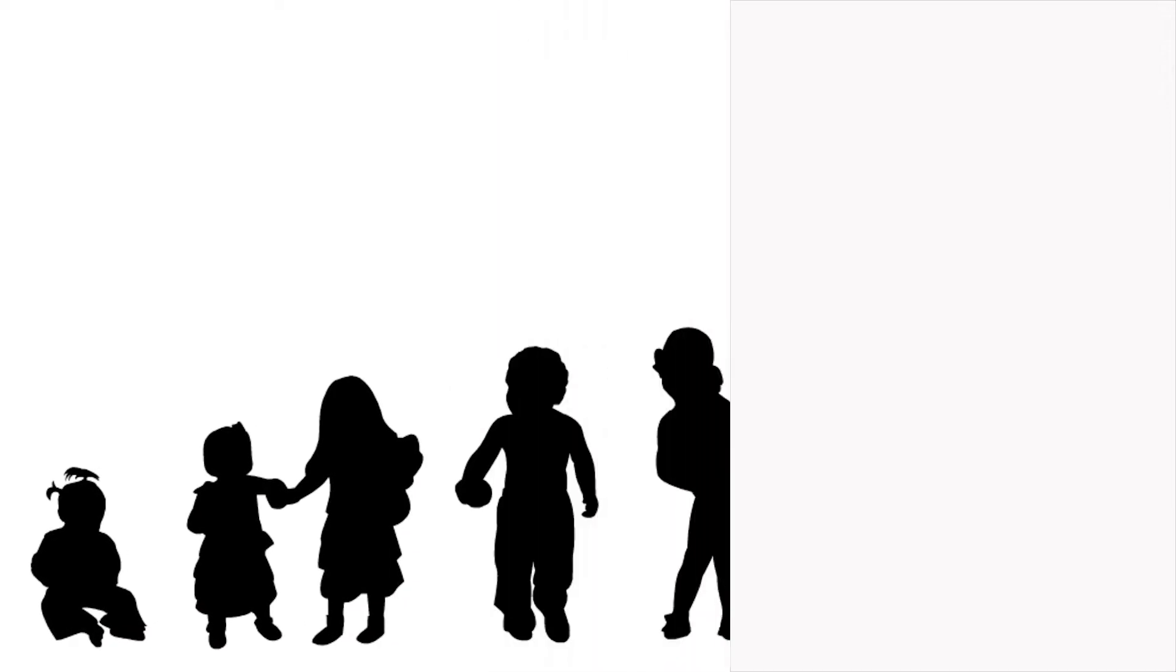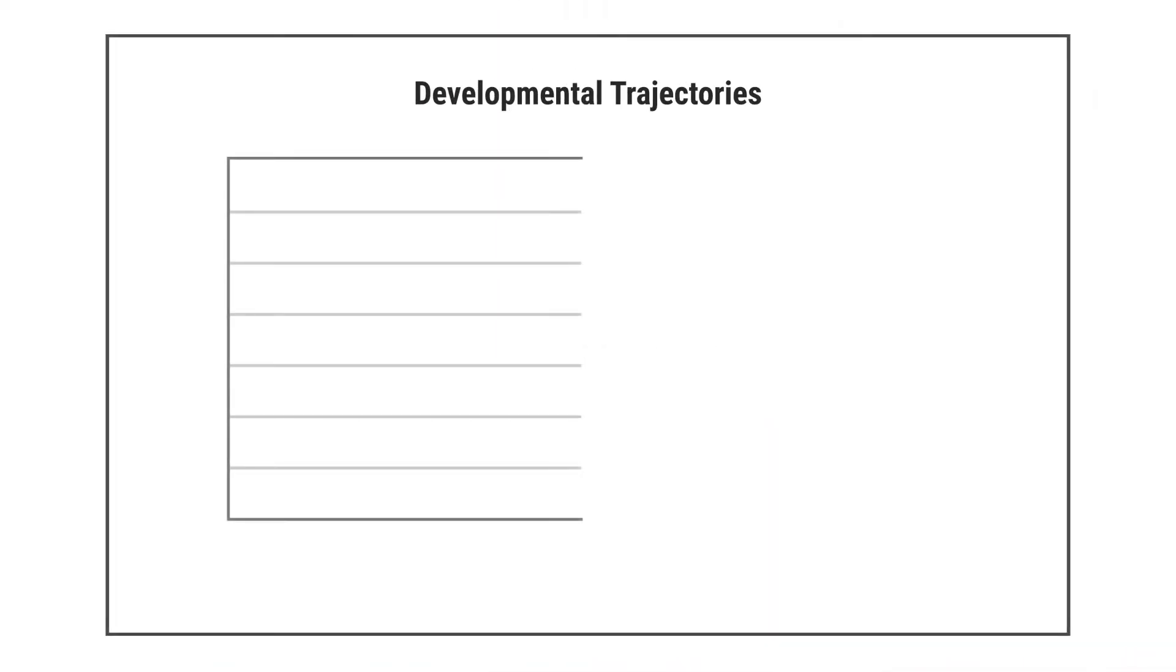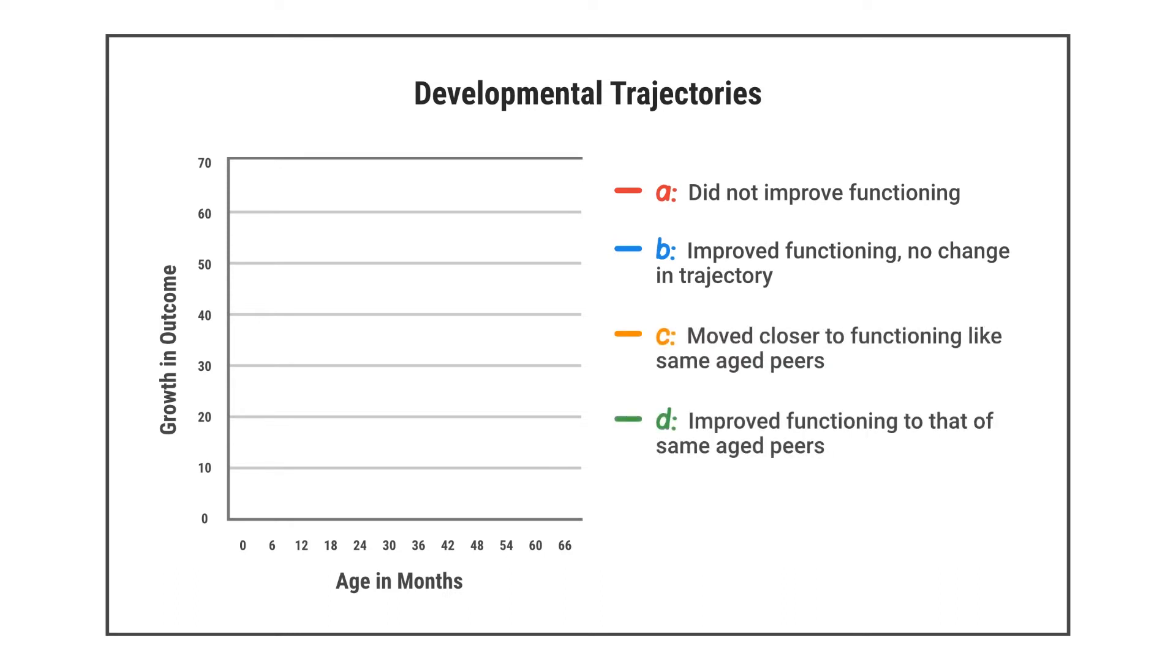The progress reporting categories can also be thought of as different developmental trajectories. In this graph, age in months is shown across the bottom. Five different trajectories of growth in an outcome are illustrated with different colored lines.